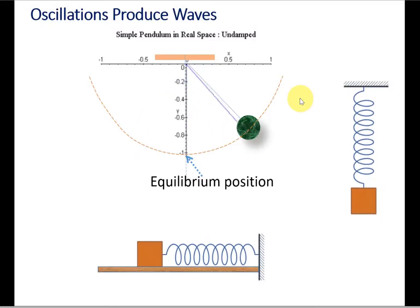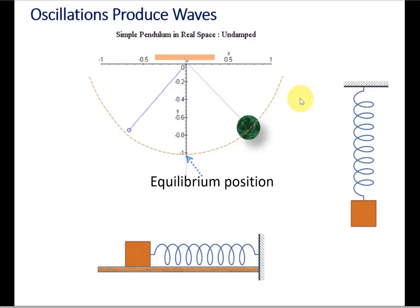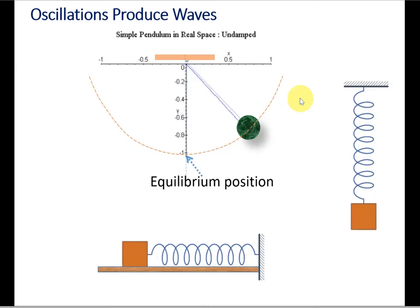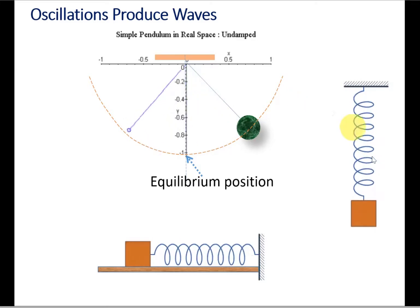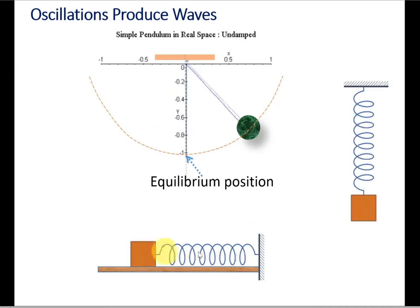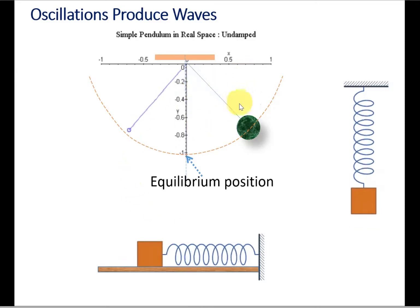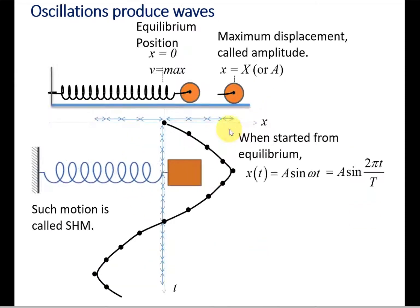We already learned that we can model many oscillatory motions by using a mass attached to a spring or a pendulum. When we ignore drag forces, they become simple harmonic motion and produce either sine or cosine waves.